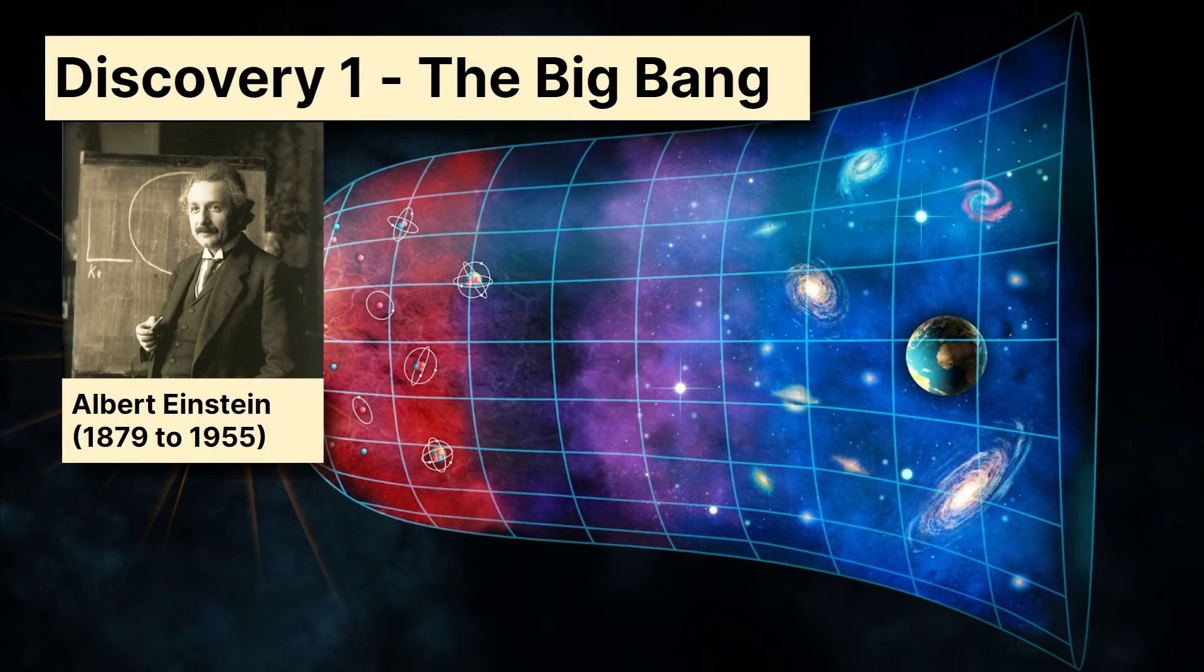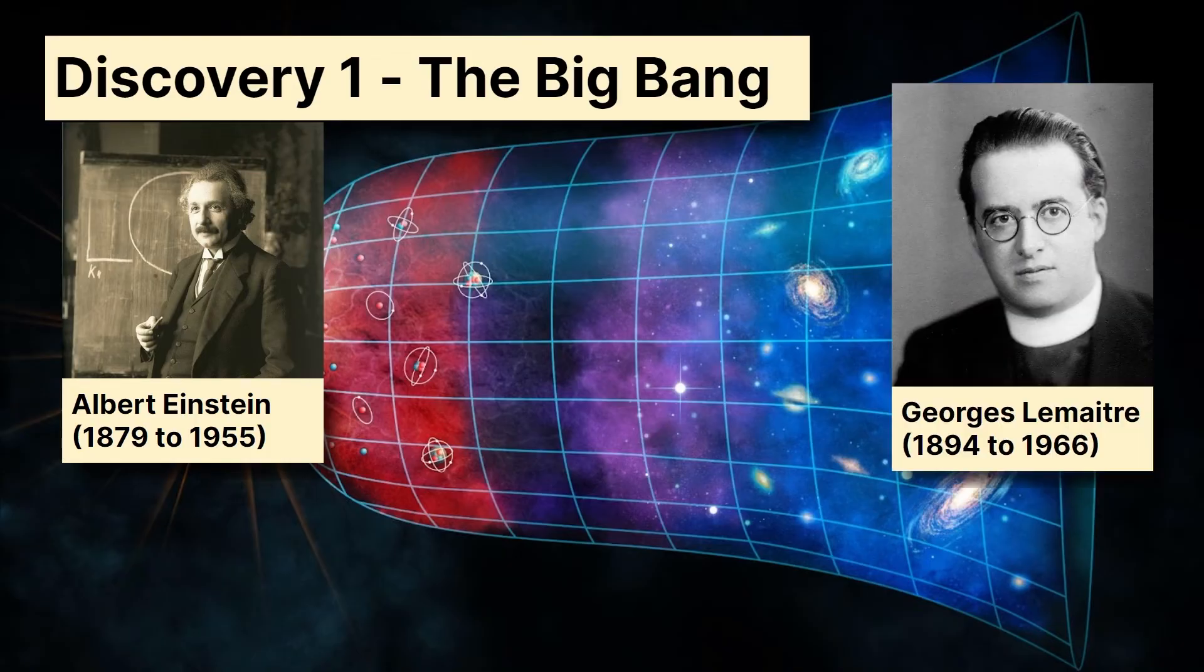Well, it started with Albert Einstein. And Albert Einstein proposed the laws of what's called general relativity, and that studied how the universe worked on a large scale. And then later, George Lemaitre, who was a Catholic priest, applied these rules to the universe as a whole. And in 1927 proposed that this actually means there is a beginning to the universe called the big bang. A pretty cool discovery, if you ask me.